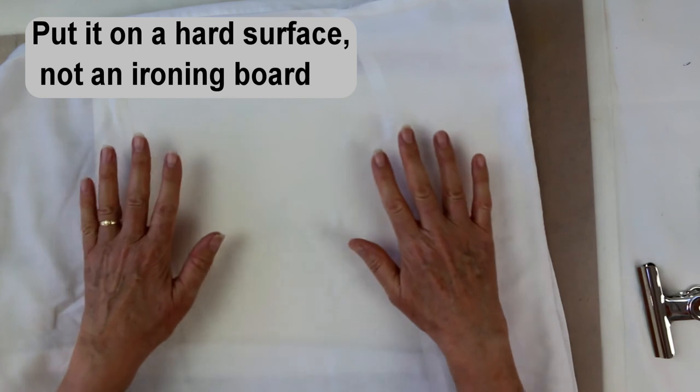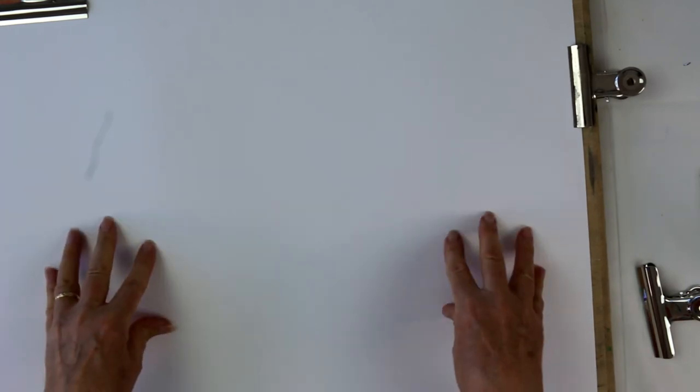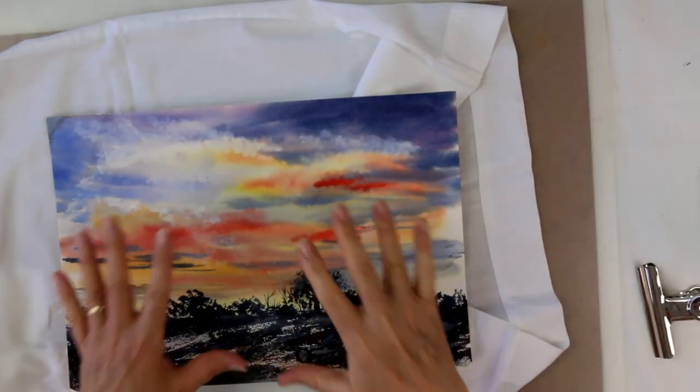And then when you've finished ironing it, once again, put a heavy weight on it and let it cool down. And once it's cooled, you take your heavy weight off and it will be completely flat.